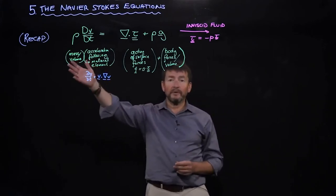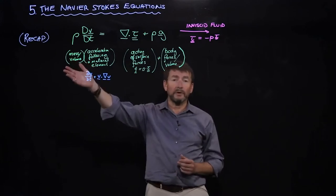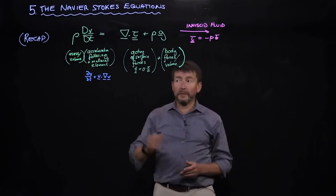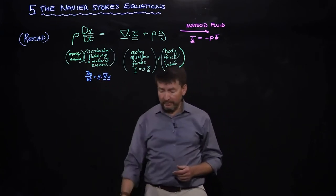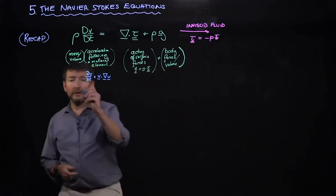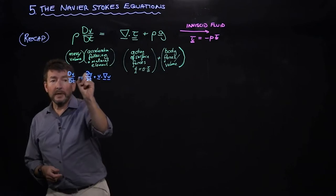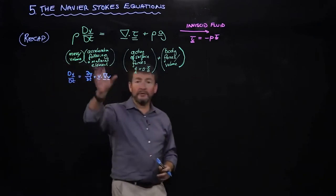On the left-hand side we have density or mass per volume multiplied by a term that tells us about acceleration. This term is our idea of a material derivative, and we developed this operator dv by dt with capital D notation.